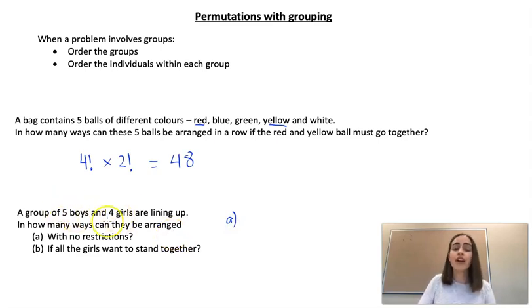So without any restrictions we have nine people, so they would be able to be rearranged in 9! different ways, which would be 362,880.